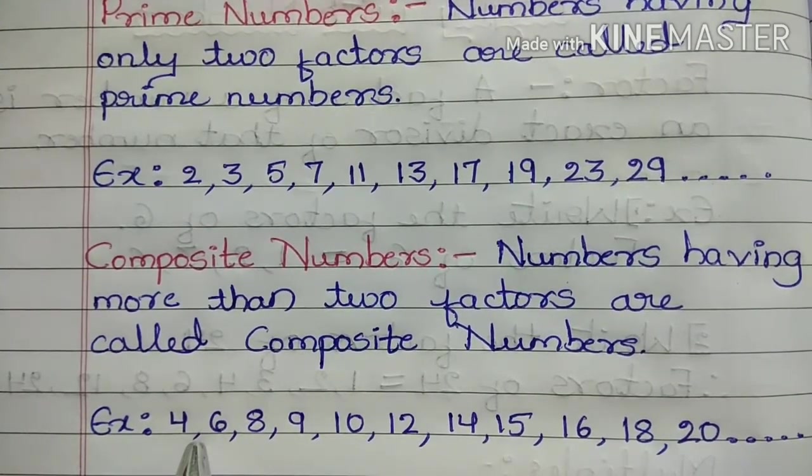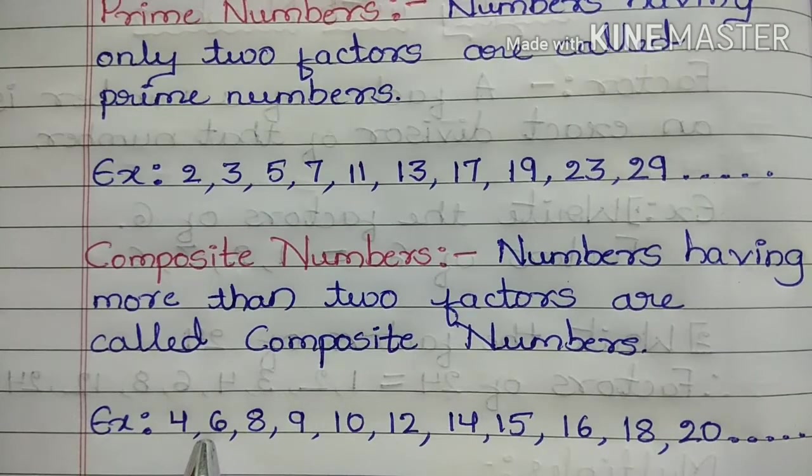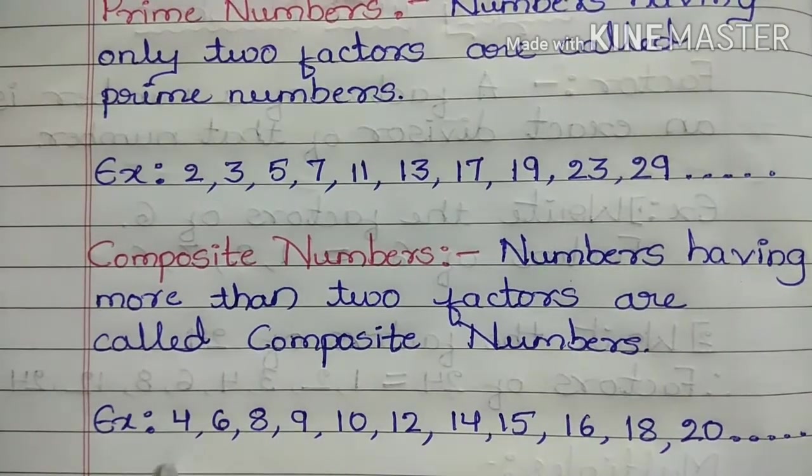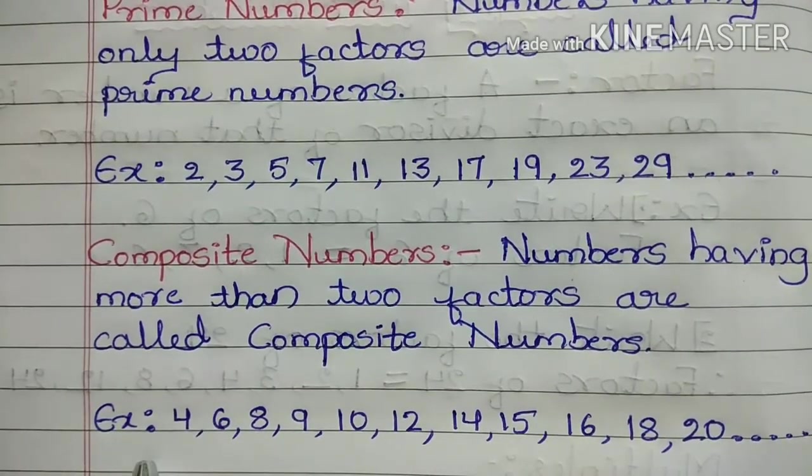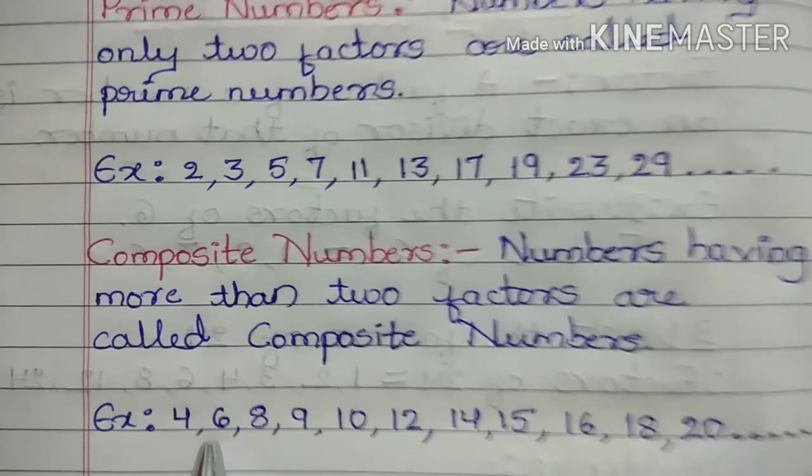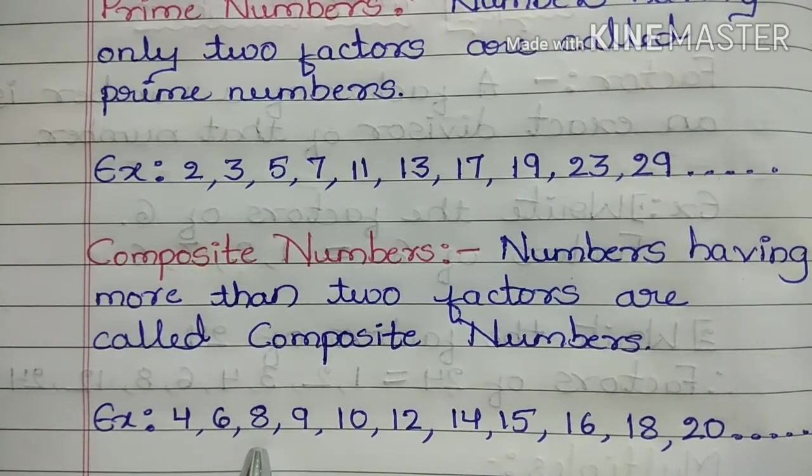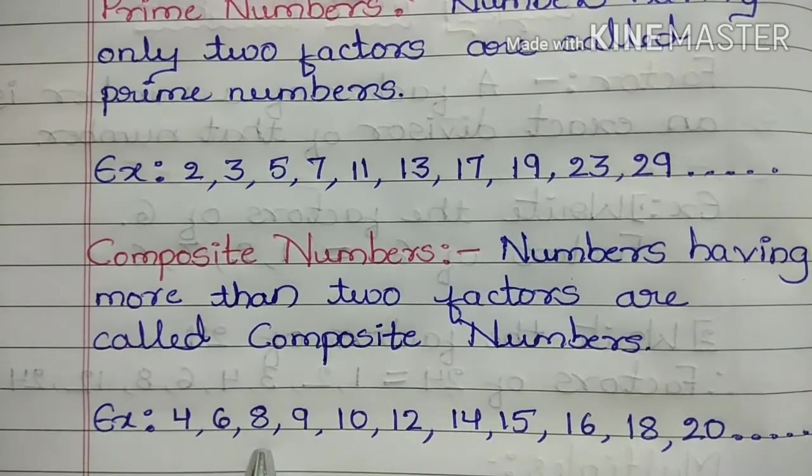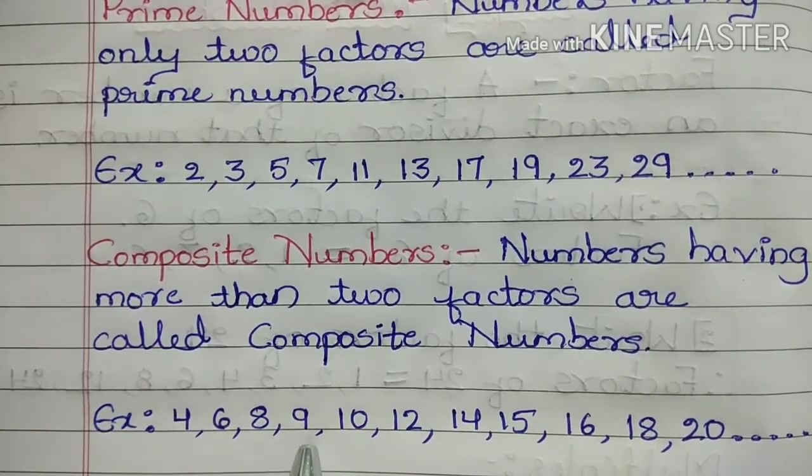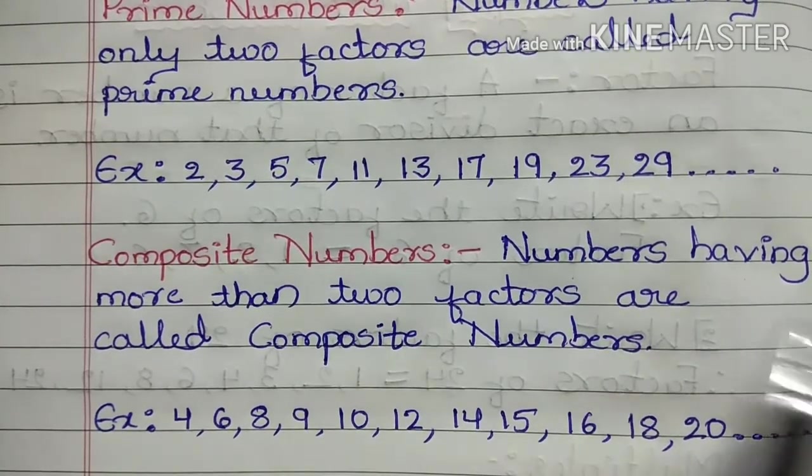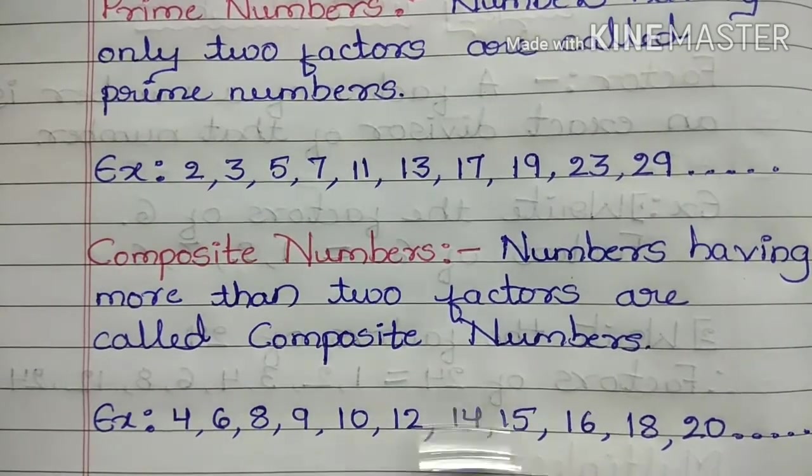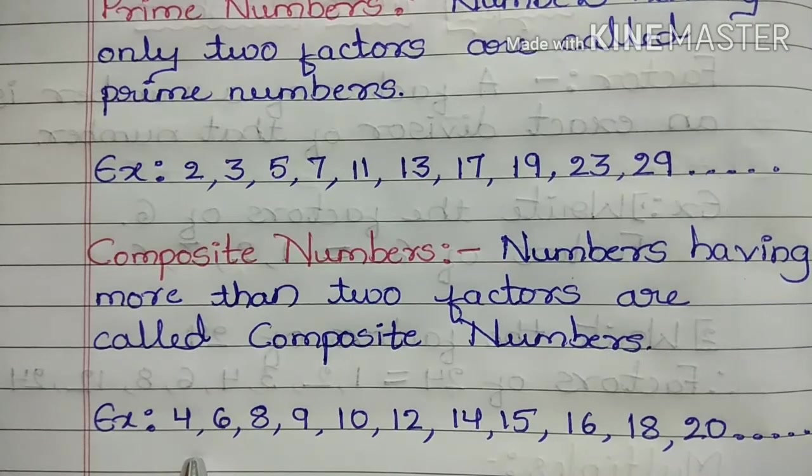See here, children. 4 has factors of 1, 2, and 4. 1 times 4 is 4, 2 times 2 is 4, 4 times 1 is 4. It is having three factors, so that is why it is a composite number. 6 also has factors: 1, 2, 3, and 6. 8 has factors: 1, 2, 4, and 8. And 9 has factors: 1, 3, and 9. It is having three factors. That is why numbers having more than two factors are called composite numbers. In composite numbers, the smallest number is 4.